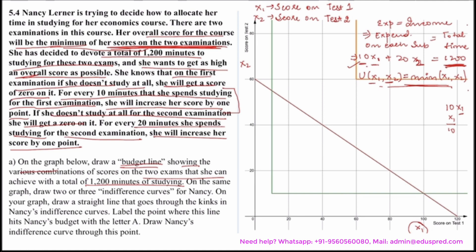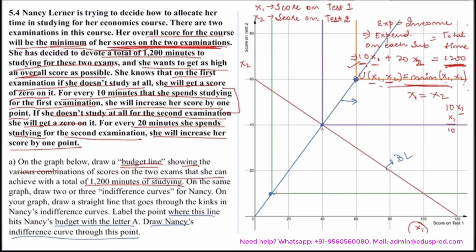The kink is at the place where both quantities are equal — that happens where x1 equals x2. The orange, brown, and green graphs are two of her indifference curves. Next, the question says to draw a straight line that goes through the kinks in the indifference curves. These two points are lying on the kinks, and if we join them we get a straight line. The question then says to label the point where this kink line hits Nancy's budget line with the letter A. Clearly the kink line hits the budget line at point A. Finally, draw Nancy's indifference curve through this point — it's her L-shaped graph, shown as the purple curve.